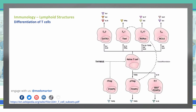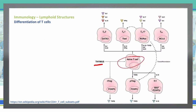Let's look at T cells and how they differentiate. We start in the thymus with our naive T cells, which can differentiate in several different ways. We're going to focus on how different interleukins, or ILs, provide the signal for those T cells to differentiate into different types of T cells.